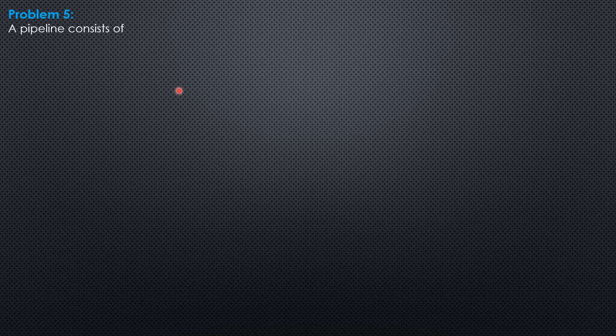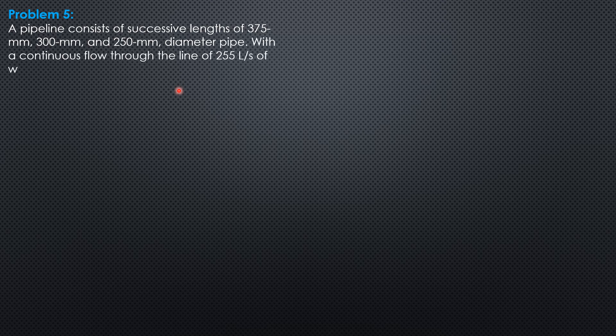Hello everyone, this is the solution to example 5 on fundamentals of fluid flow. A pipeline consists of successive lengths of 375 mm, 300 mm, and 250 mm diameter pipe, with a continuous flow through the line of 255 liters per second of water. Compute the mean velocity in each size of pipe.